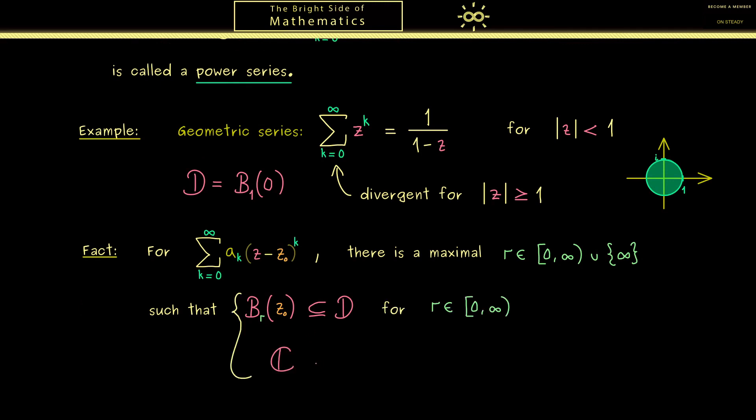Of course I told you before the second case is just that D is the whole complex plane. This is the best case because there the power series converges everywhere. In the other case please note that we know that somewhere on the boundary or outside of the ball we have divergence.